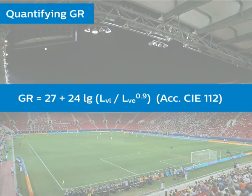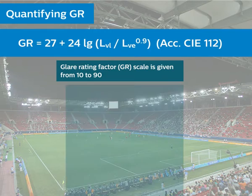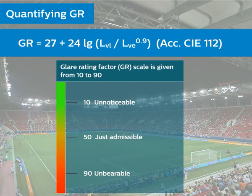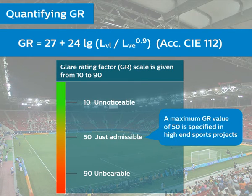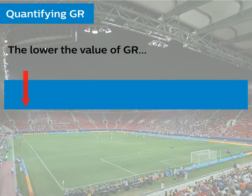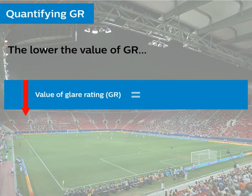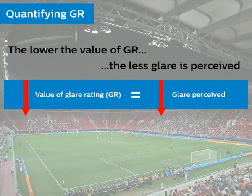GR is approximated by this formula. The GR scale is given from 10 to 90. A maximum GR value of 50 is generally specified in high-end sports projects. The lower the value of GR, the less glare that is perceived.